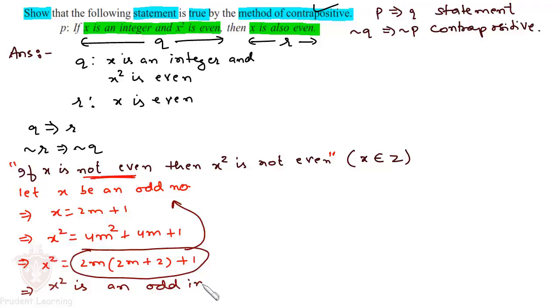Which simply means x is not even. By this, we have proved that negation r implies negation q, which means q implies r is true. This completes our solution.